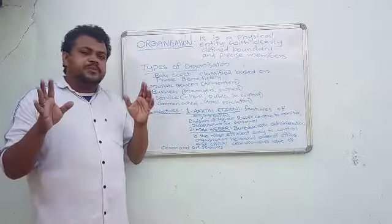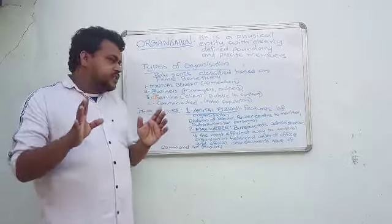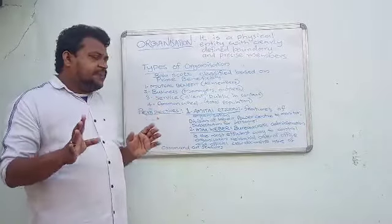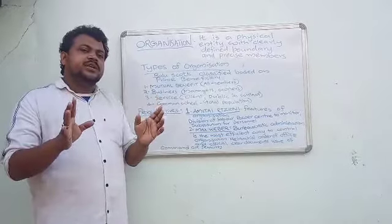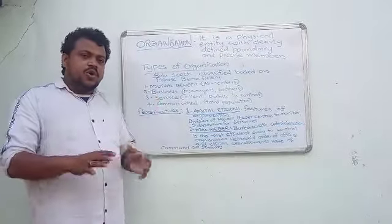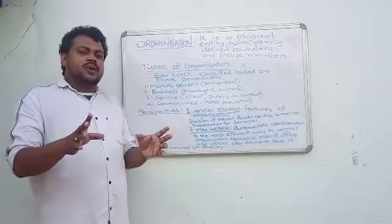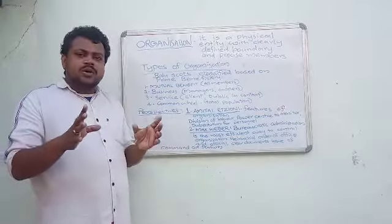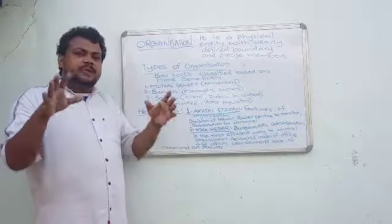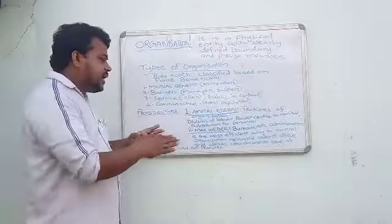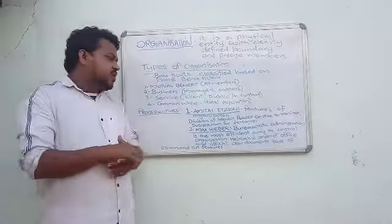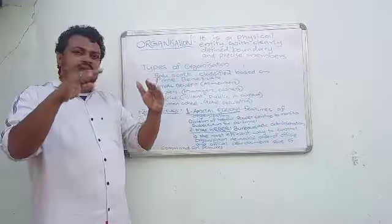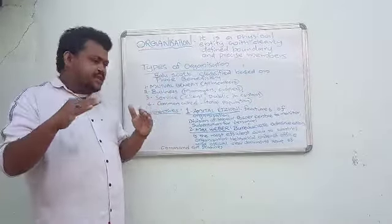And second one, the Weberian perspective. Weber says that bureaucratic administration is the most efficient organizing the social structure. So the hierarchical order or the bureaucratic order. Using the bureaucratic order, we can maintain order in any organization. What are the specialities of bureaucratic order? There will be hierarchy. Many hierarchies will be there.